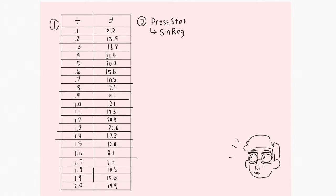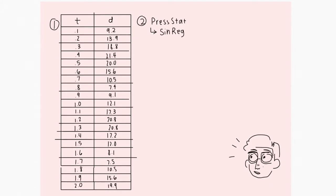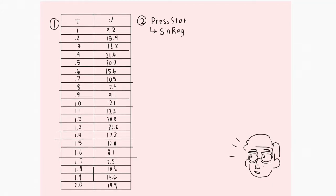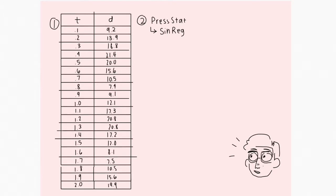Once we have done that, we're going to press the stat button again, go to calc, and then press alpha and then c, which is a quick shortcut to get to the sine reg.